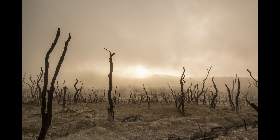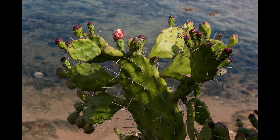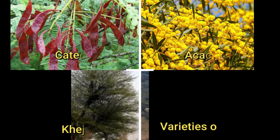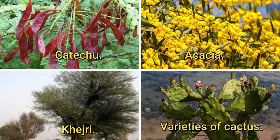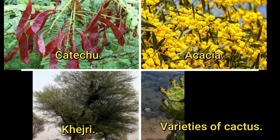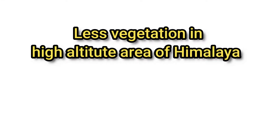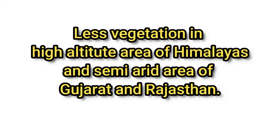Vegetation is also less in areas receiving less than 500 mm of rainfall, like the semi-arid regions of Gujarat and Rajasthan, where thorny and shrub-type vegetation is found. Cactus, acacia, khejri, aloe vera, and agave are the main types of vegetation found here. Therefore, we have less vegetation in both the high altitude areas of the Himalaya and the semi-arid areas of Gujarat and Rajasthan.